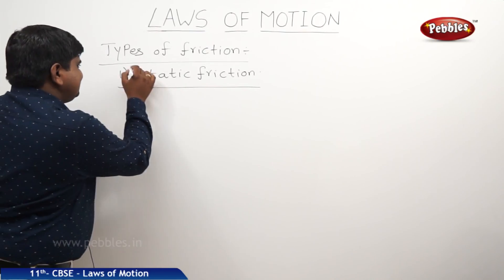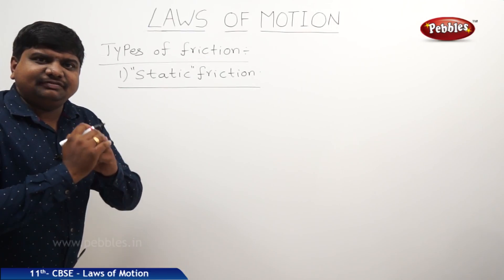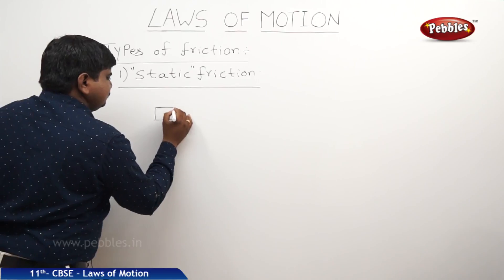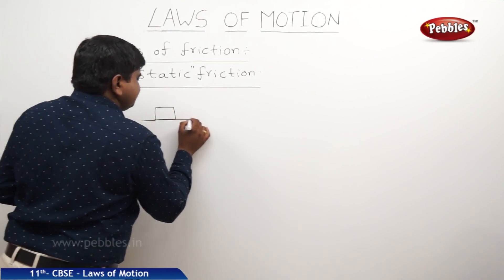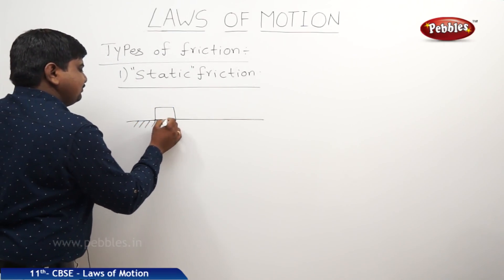The title itself says that static means steady. So what is the meaning of this static friction? Let us take a body which is on a horizontal surface. This is the representation of the surface.